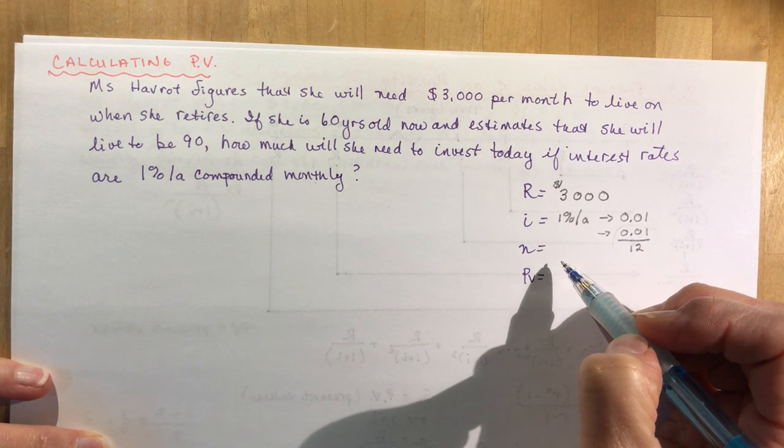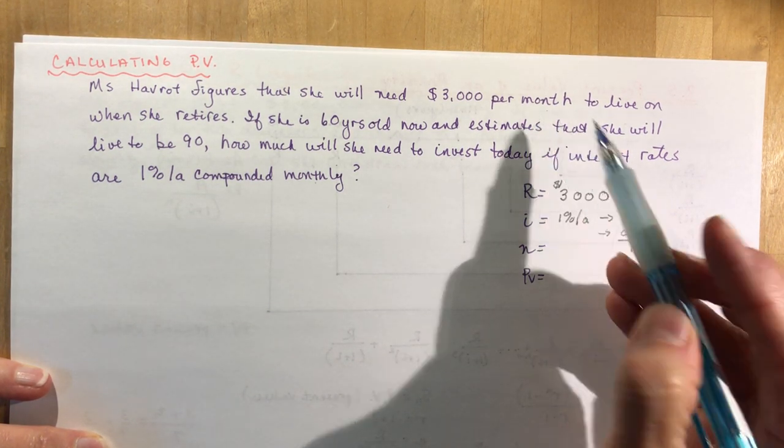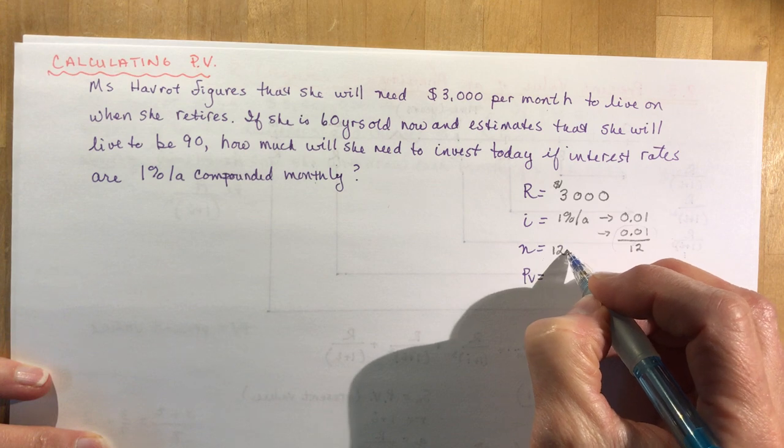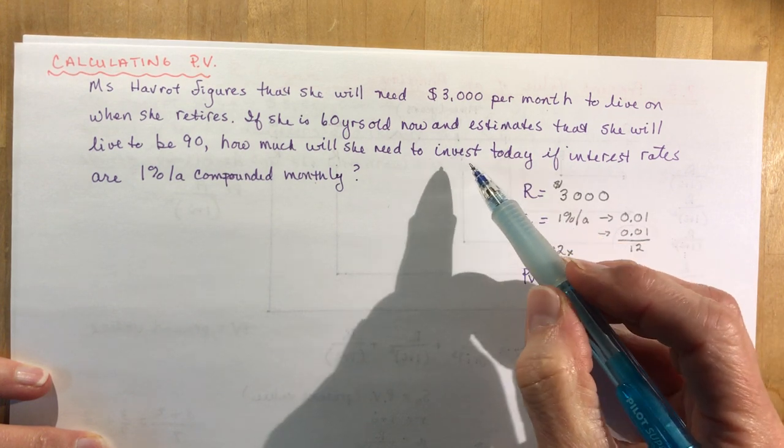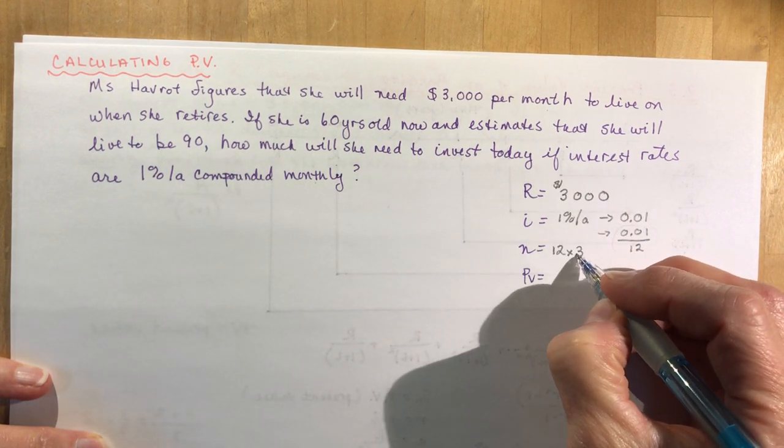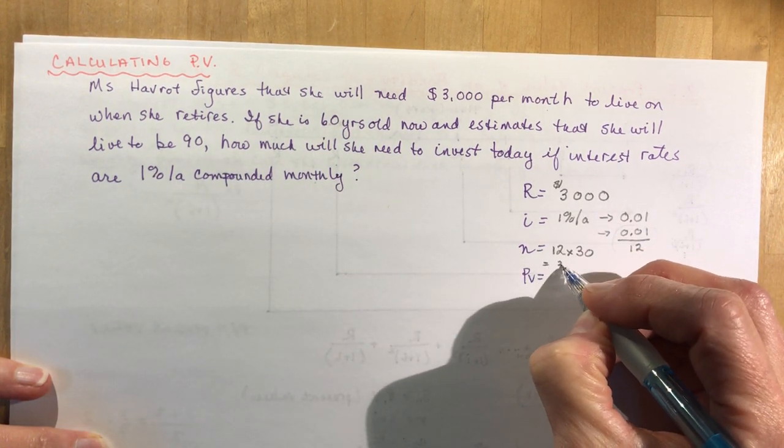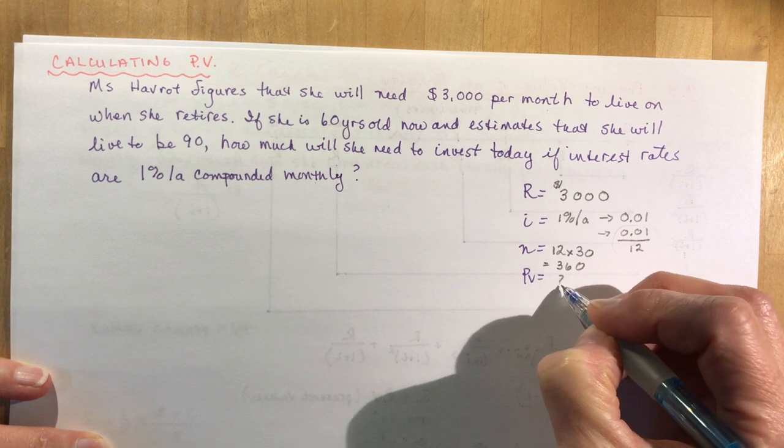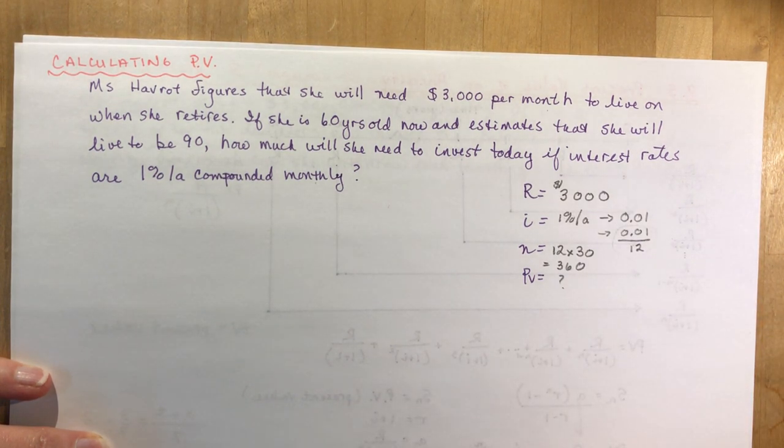n, my n is going to be monthly, so that's 12 times the number of years and the number of years is 30 from 60 to 90. So that's going to give me an n of 360 and your job is to calculate the present value.